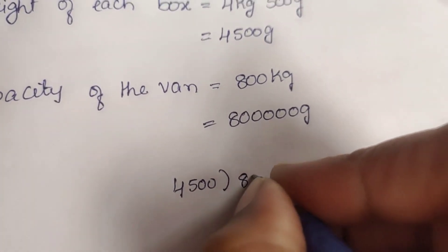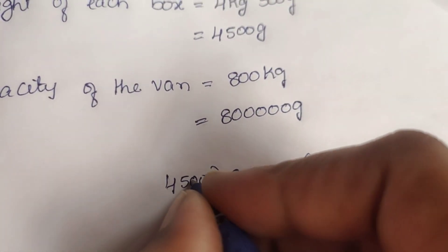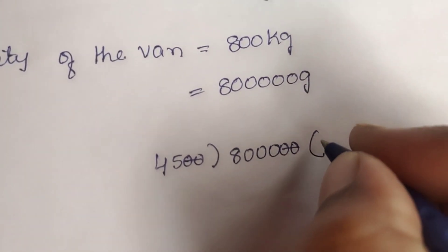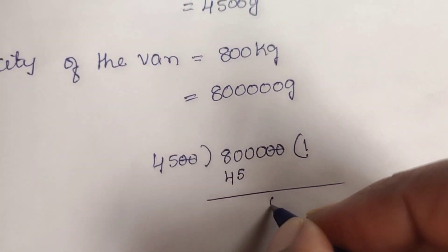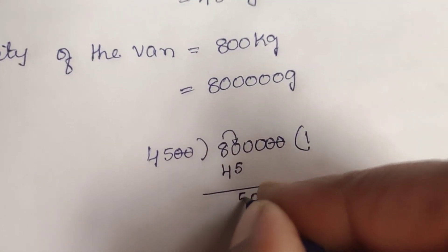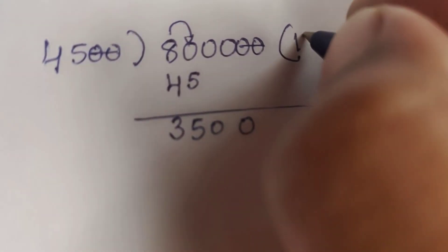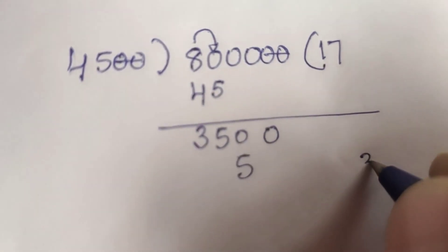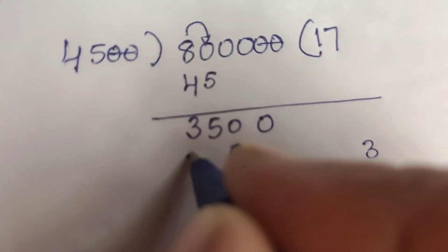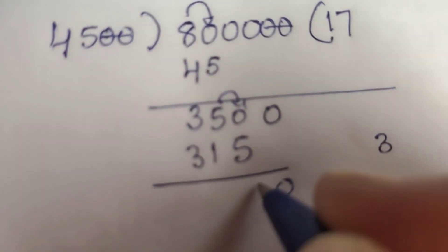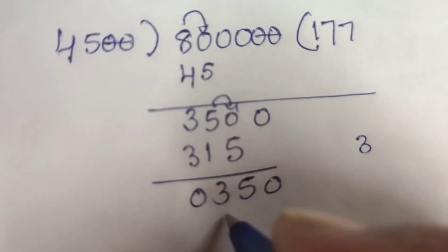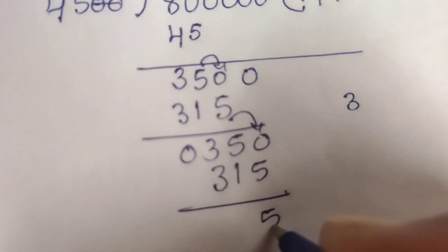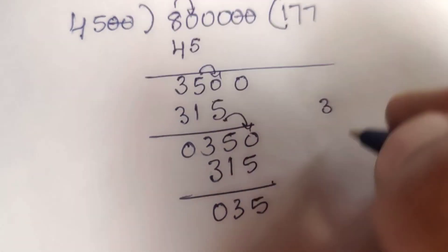We divide 800,000 by 4,500. Cancel two zeros, so 45 divides 8,000. 45 goes into 45 once. Zero. 5×7 is 35, 3 carry. 7×4 is 28 plus 3 is 31. Then 1 carry, 10 minus 5 is 5. 4 minus 1 is 3, 3 minus 3 is 0. Then 7×3 is 21, so 1 carry, 5. 4 minus 1 is 3. So total, 177 boxes can be filled in the van.